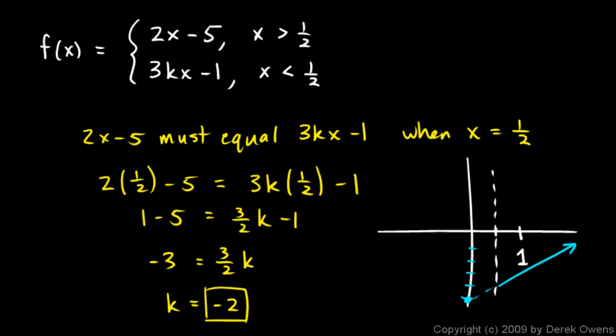And then when x is less than 1 half, it has a slope here of negative 6. This is 3 times k. It's negative 6x minus 1. So it's going to do like this.